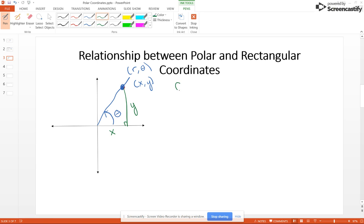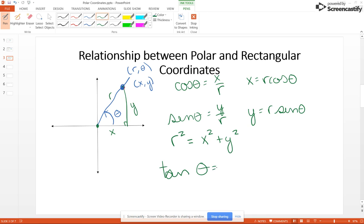So cosine of theta is going to be x over r. Of course, r is the distance between these two points. So x is r cosine theta. And then sine theta is y over r, so y is r sine theta. And since this is a right triangle, Pythagorean formula says that r squared equals x squared plus y squared. And then we have another relationship we can use: tangent of theta is y over x.